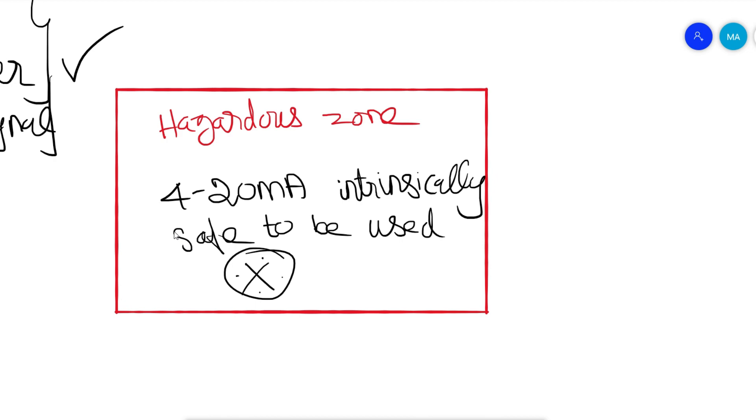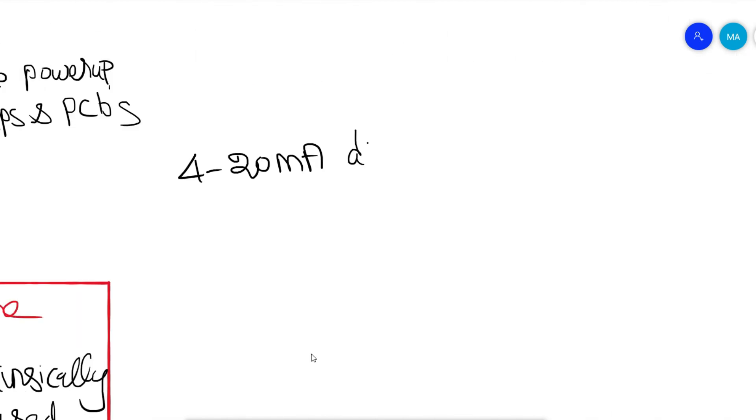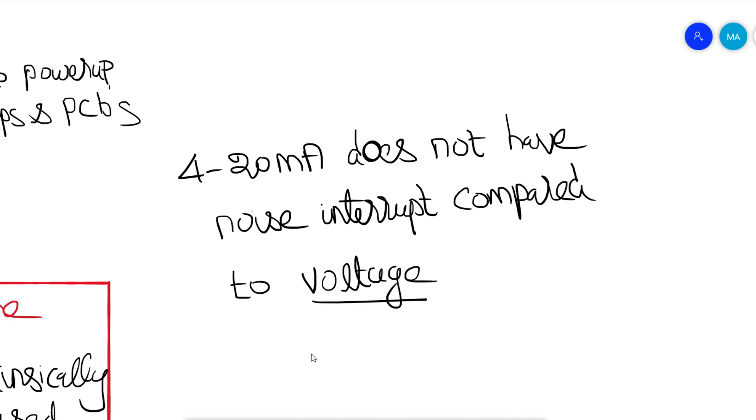4-20 milliamps signal is less susceptible to noise pickup than a voltage circuit. 4-20 milliamps is relatively free from interference and crosstalk from other signals.